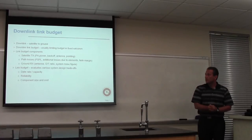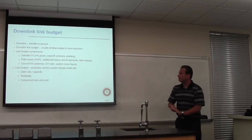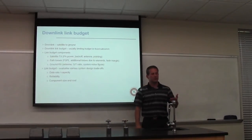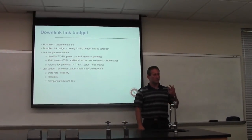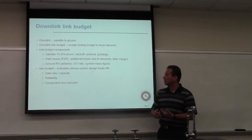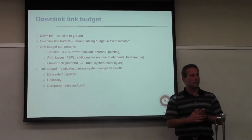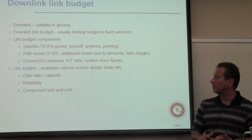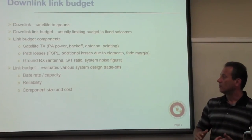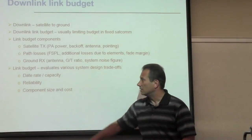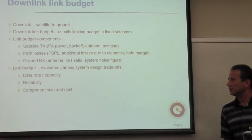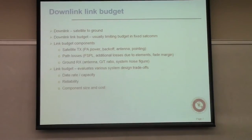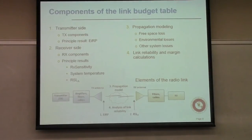When you do the link budget, it's really no different than balancing your checkbook — you account for all the gains and losses. The tricky part is those things you cannot predict, so we protect against them by budgeting a design margin. The link budget evaluates various design trade-offs. The fundamental trade-offs are data rate, bandwidth, and power — capacity, bandwidth, and power — all balanced against reliability, component size, and practical aspects of the design.